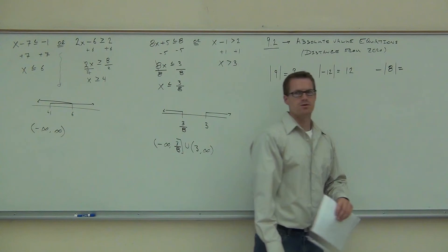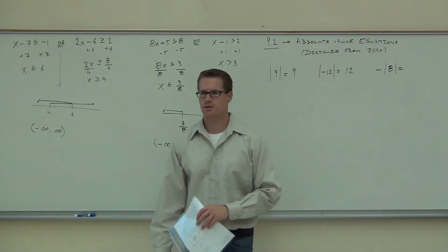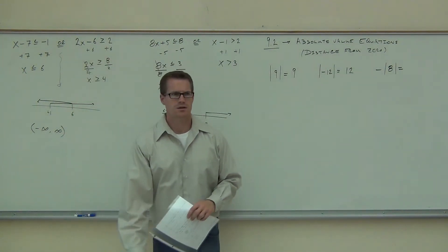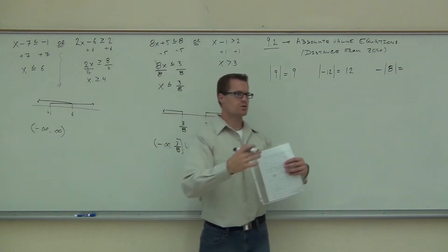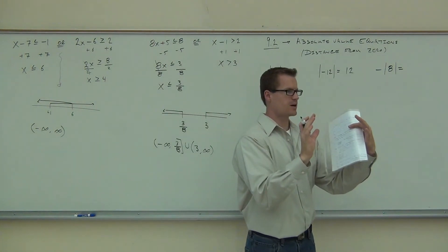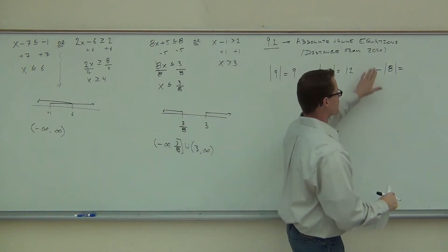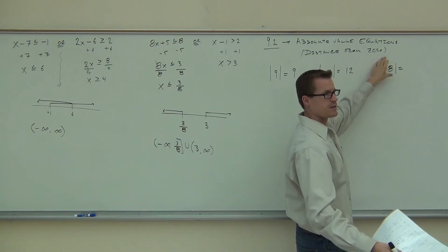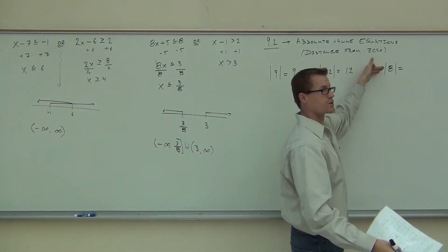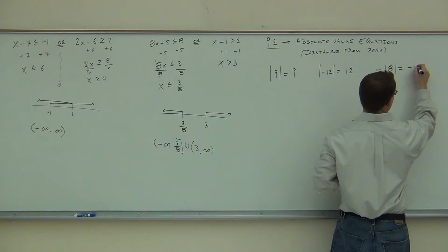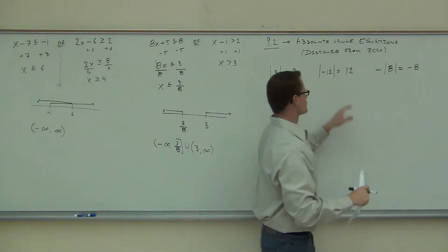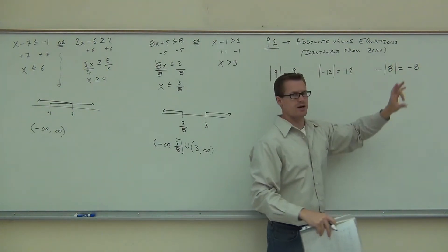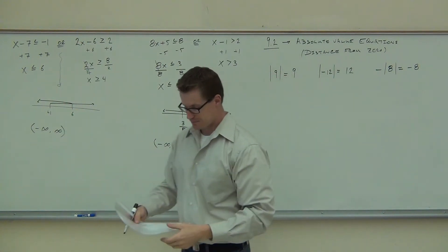What about negative absolute value of eight — is it eight or negative eight? Why doesn't that change to positive eight? That negative is only applied outside the absolute value. So this is basically saying it's the absolute value of eight and then take the opposite, or take the negative of that. So this happens to be negative eight for sure. If the negative is outside of the absolute value, it doesn't get applied inside.